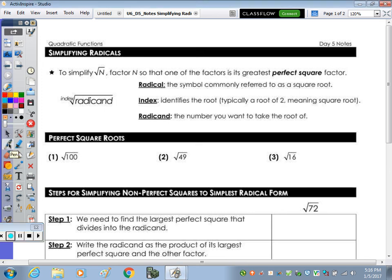A radical is a square root. So to simplify the square root of n, where n is just some number, we factor. Remember, factor times factor equals a product. So we factor it out so that one of the factors is its greatest perfect square.